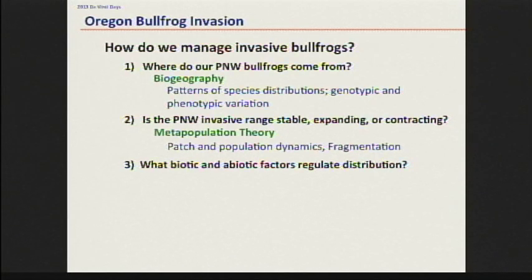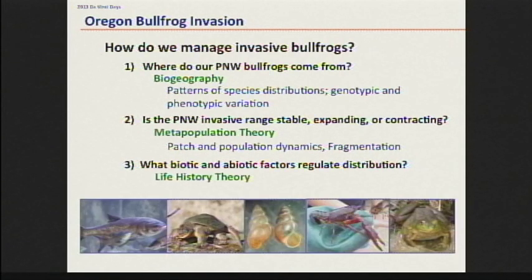I used metapopulation theory to understand whether the range is expanding or contracting, specifically in the Willamette Valley. And then I used life history theory to get at the traits that may be more susceptible to environmental or management pressure — it's possible we can find some silver bullet that might help us control these invaders.